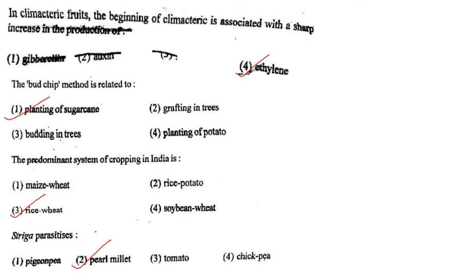Next one: Striga parasitizes option 1, pigeon pea; option 2, pearl millet; option 3, tomato; option 4, chickpea. Answer is option 2: pearl millet.